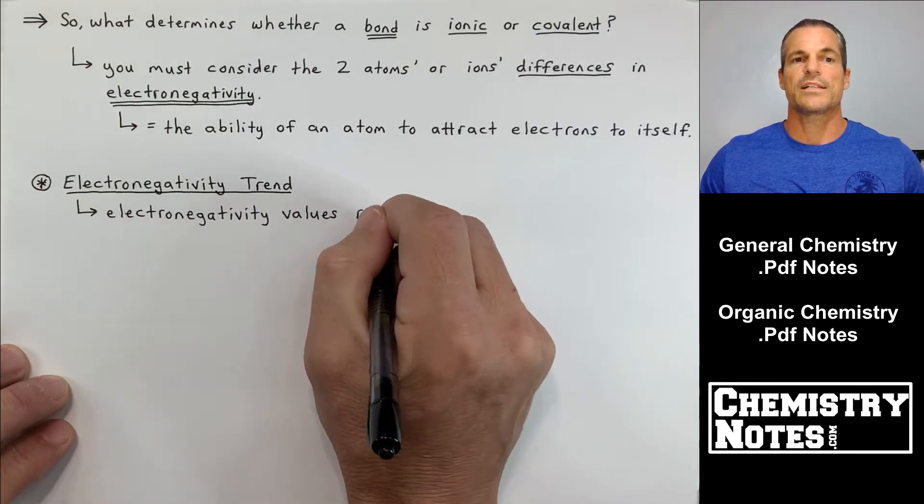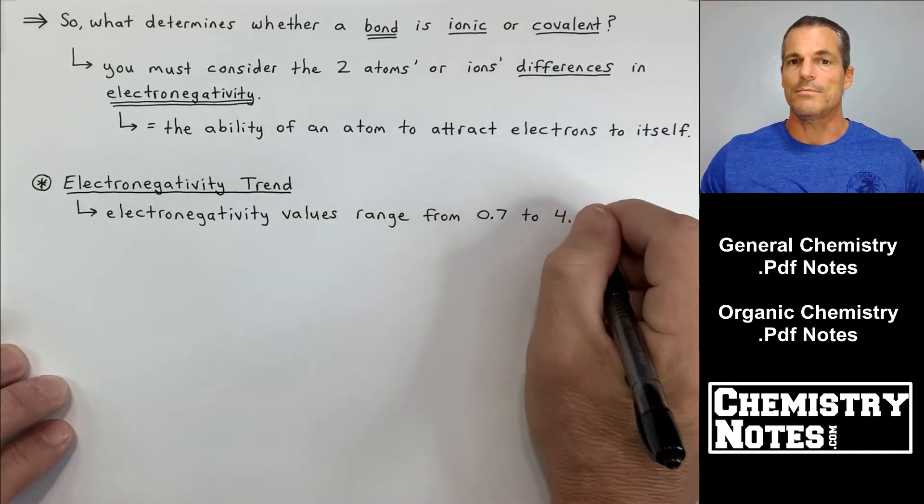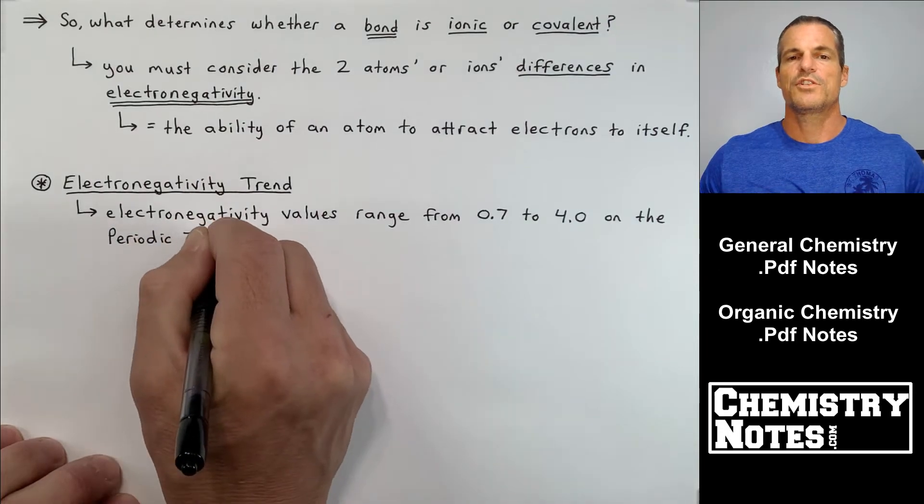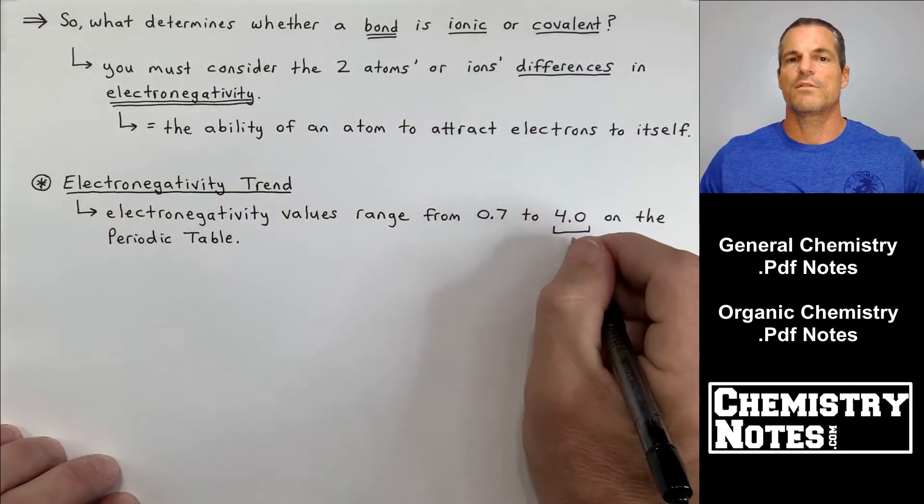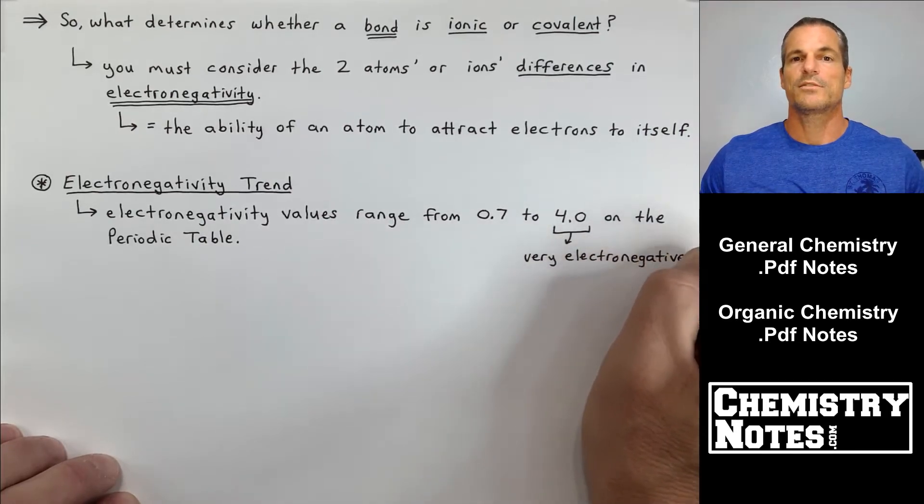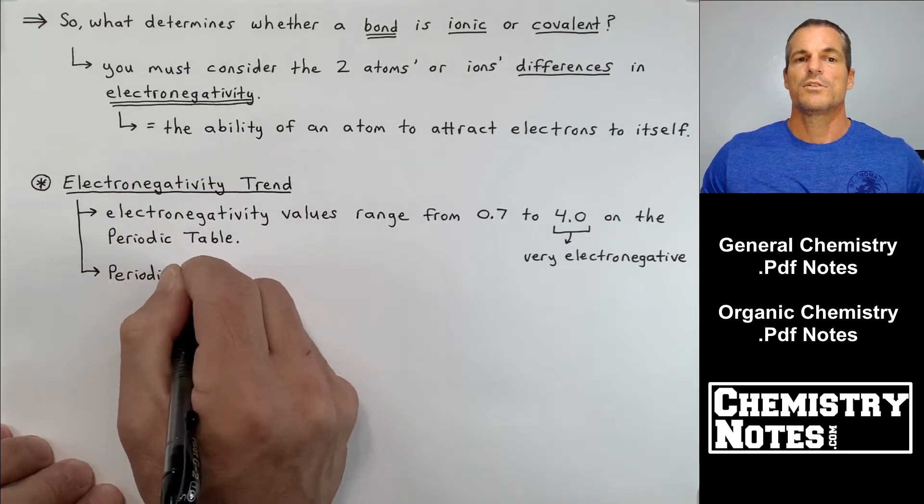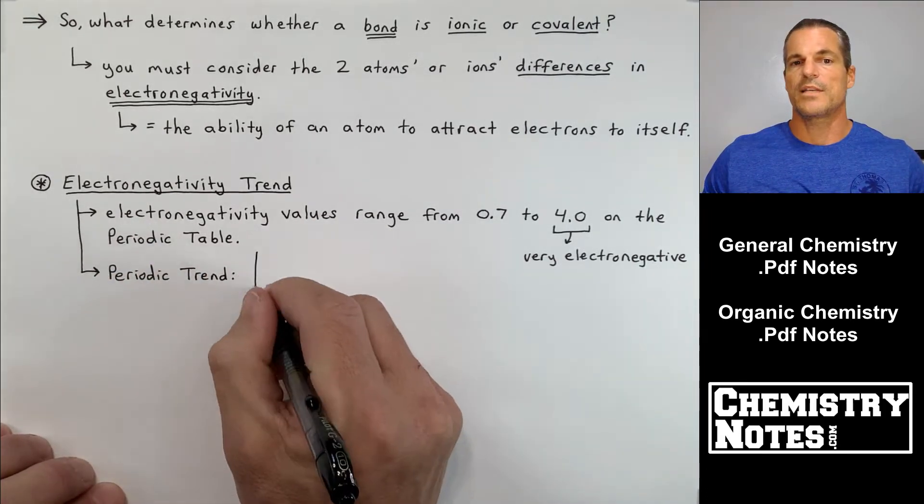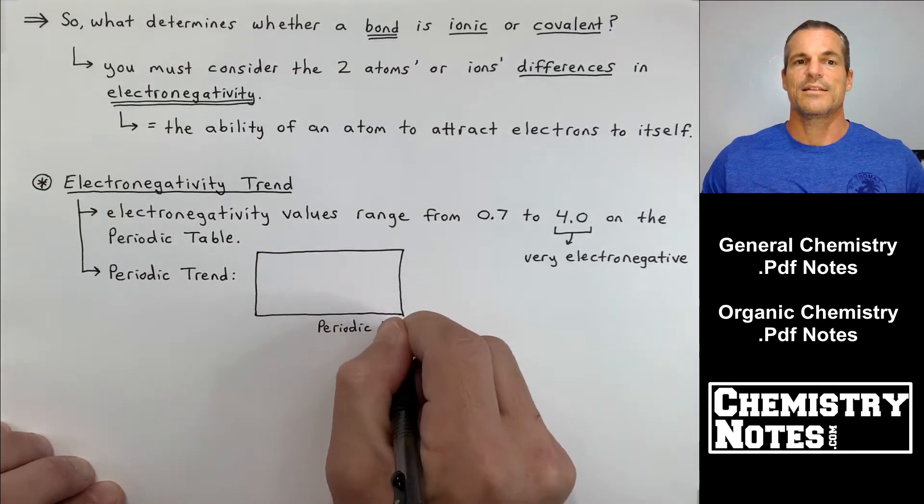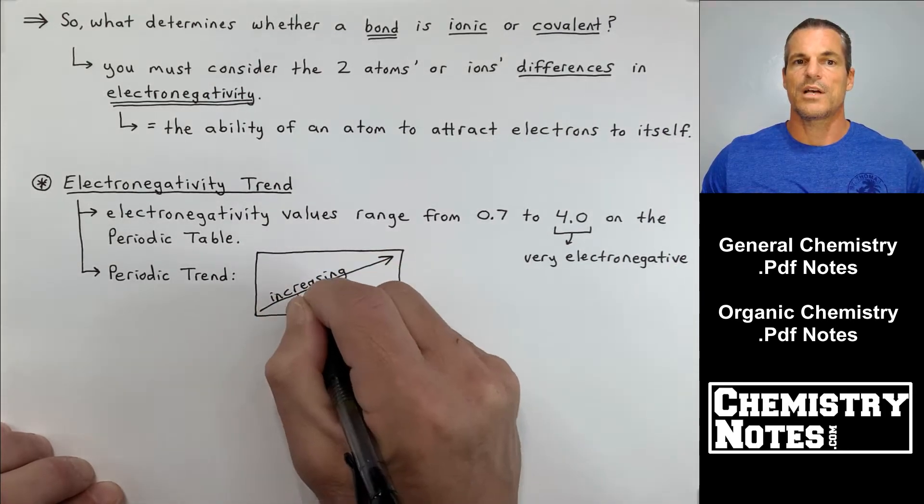It says electronegativity trend. Electronegativity values range from 0.7 all the way up to 4.0 on the periodic table. Now generally, the values for these guys will be given to you. There's no way to memorize them all, but we can also make some generalizations about the overall trends just by drawing.